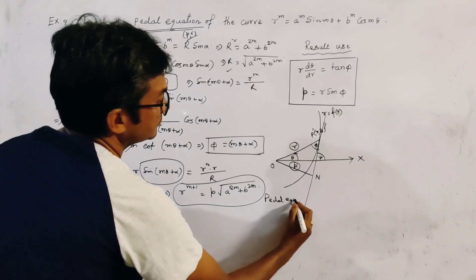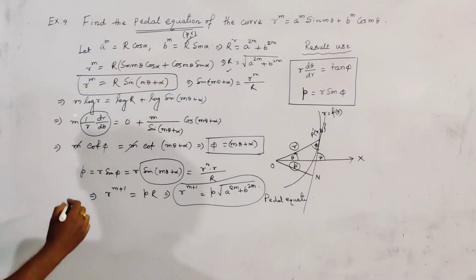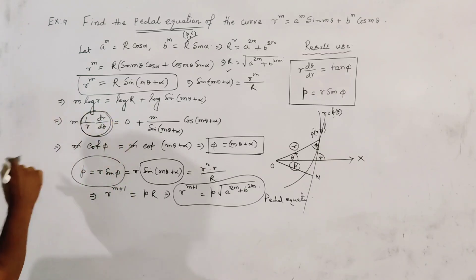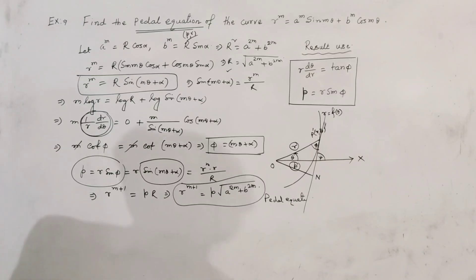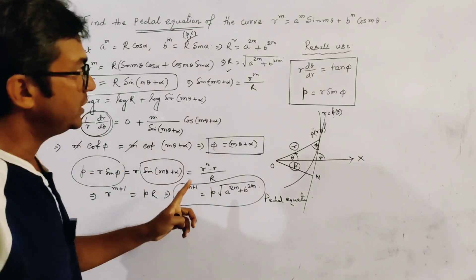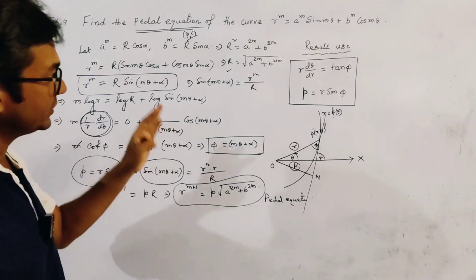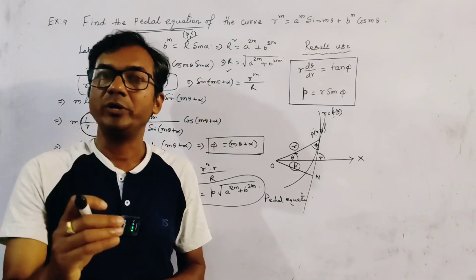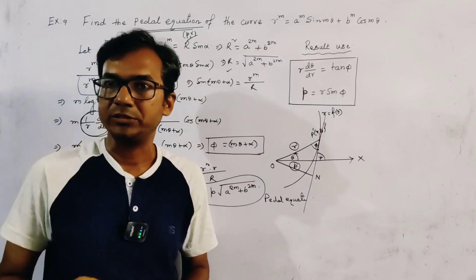We can see that these two relations — r·dθ/dr = tan(φ) and p = r·sin(φ) — play an important role in solving the problem and finding the pedal equation of this polar curve. This is a very important problem from your university previous year papers. Thank you for watching.